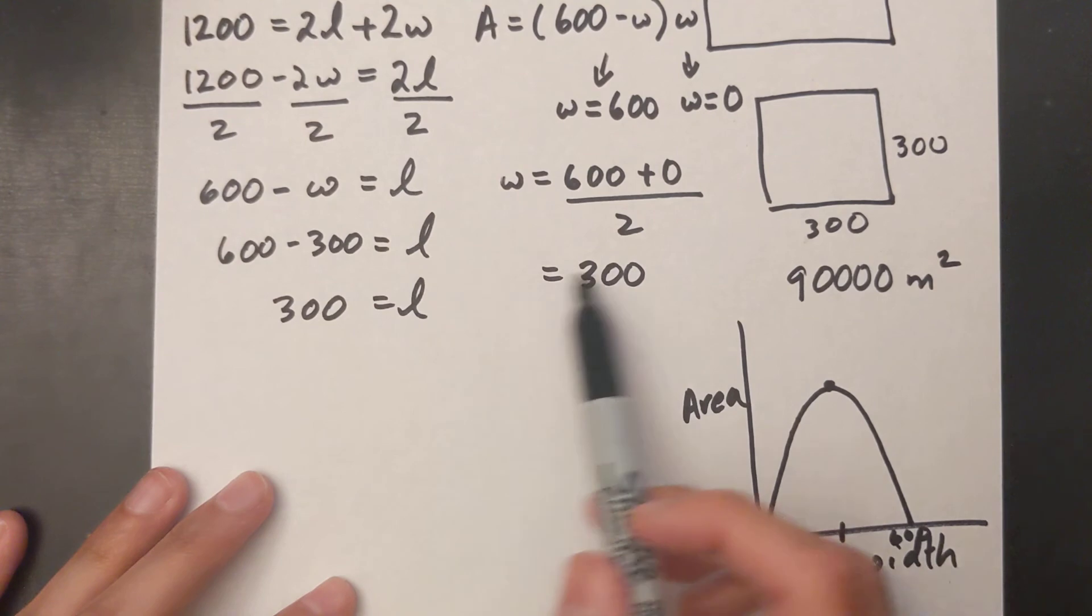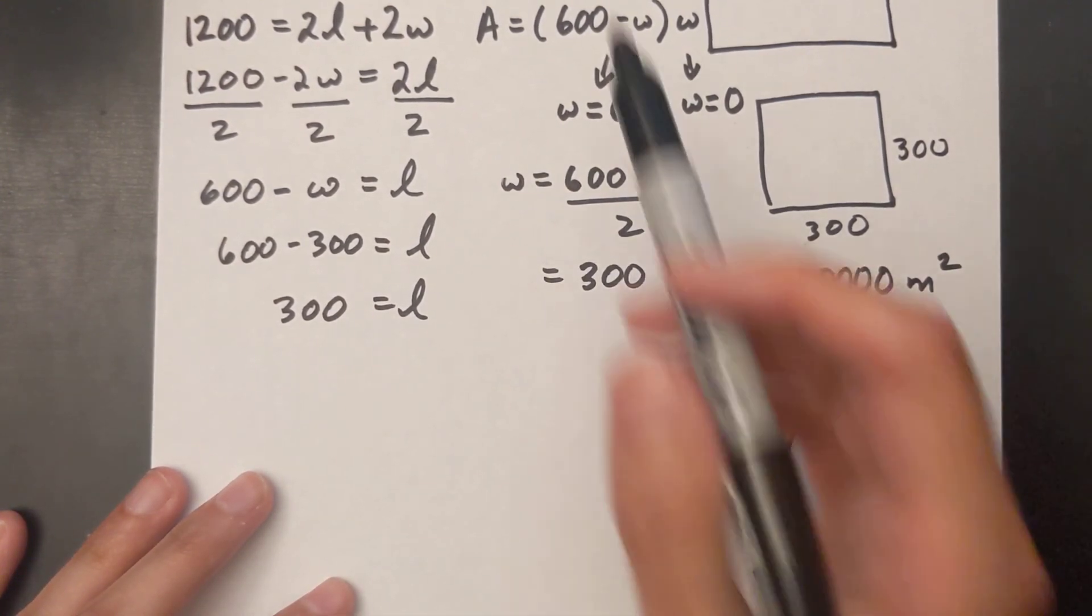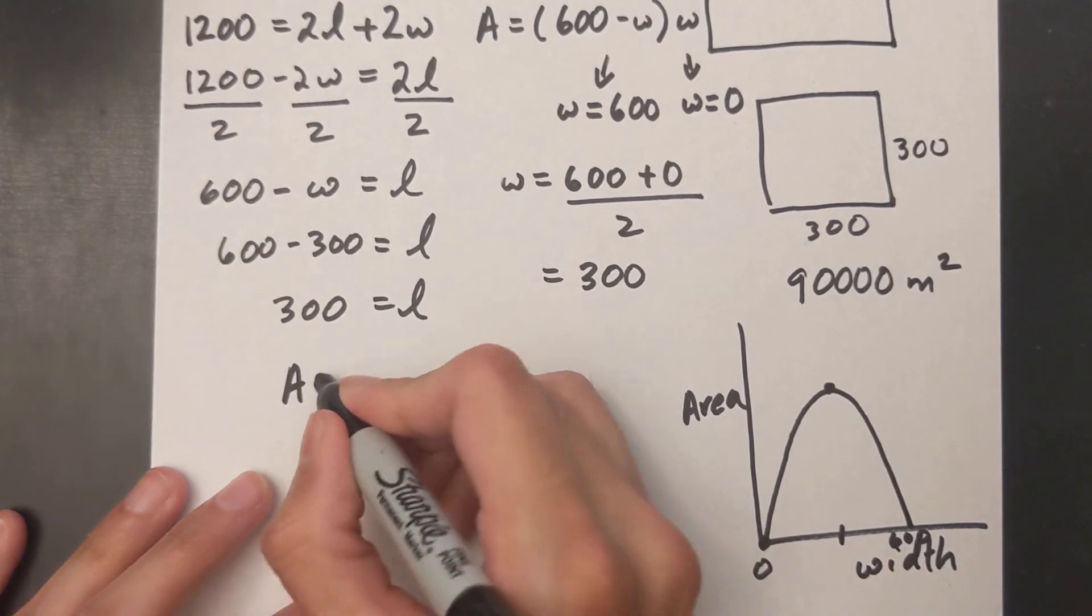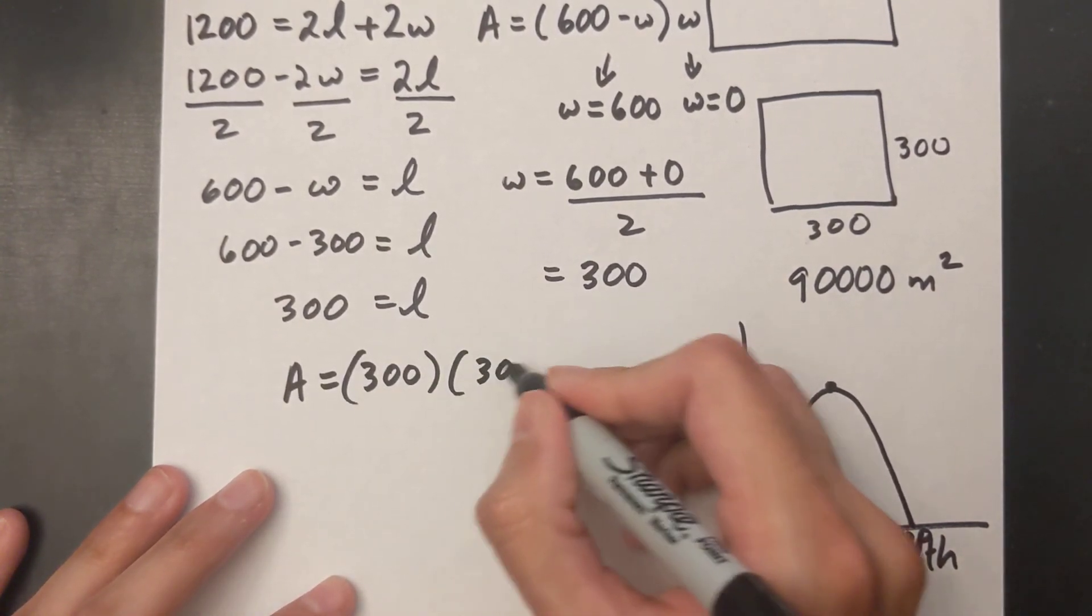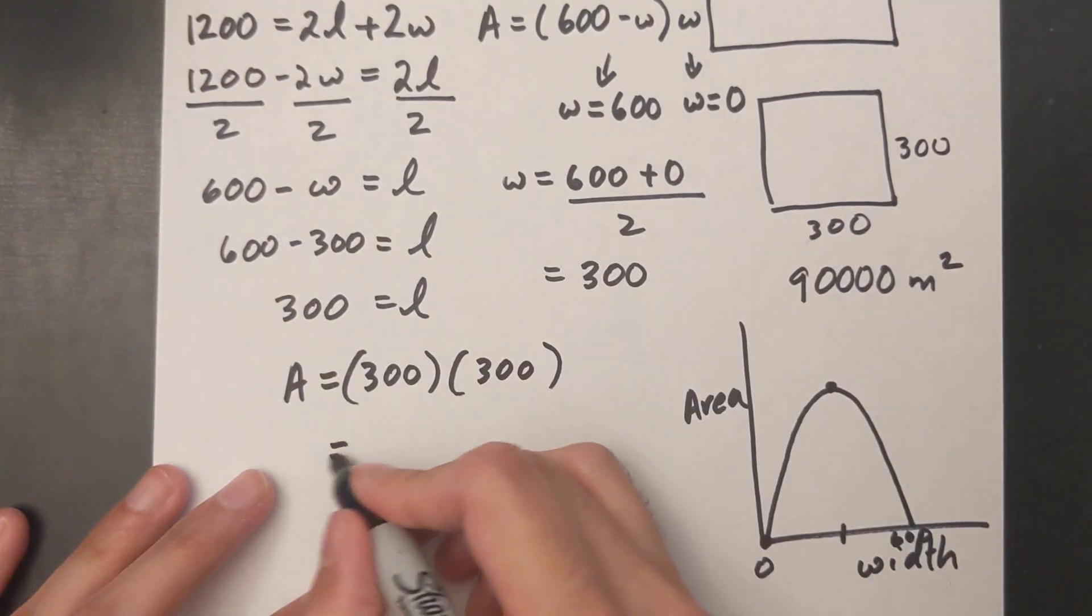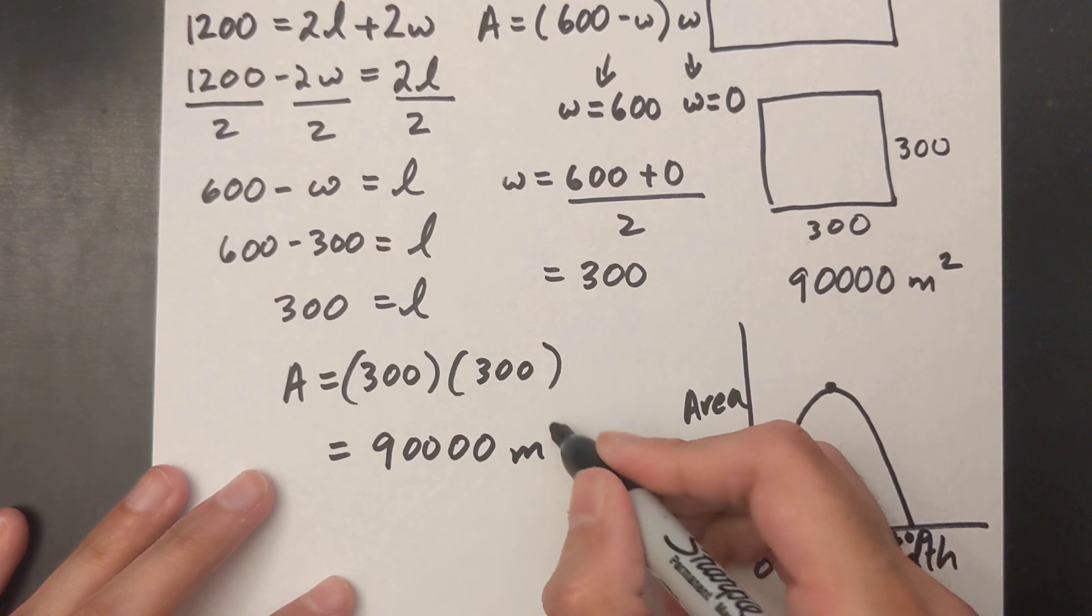So as you can see that's what I've shown here with this square. Your width and your length I proved algebraically are exactly the same. All I have to do is sub it in my area equation, so area is length times width, which is the exact same solution there as 90,000 meters squared.